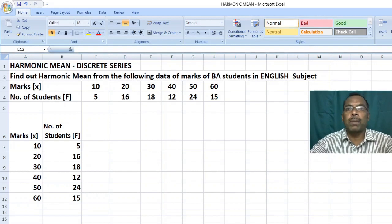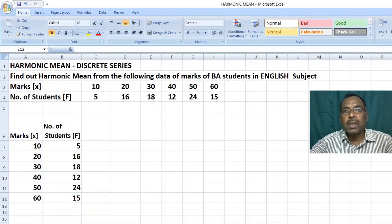You have found out 1 by x. In discrete series, after finding 1 by x for each value, you are going to multiply with number of frequencies. Because in discrete series, there will be multiple frequencies. Okay students, you are going to learn by practicing that. Thank you. Watch carefully.